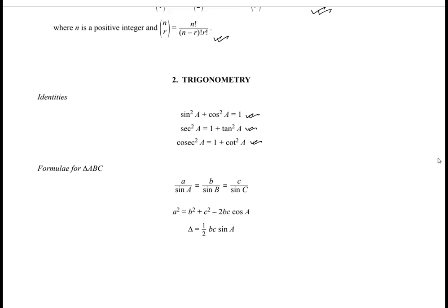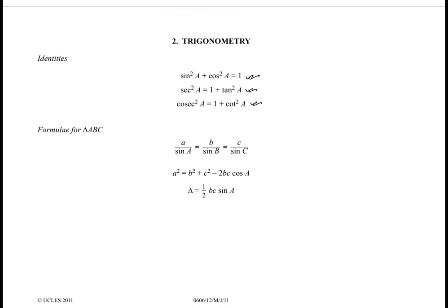The last part of the formula page contains formulas from triangle ABC. The first is the sine rule, the second is the cosine rule, and the last one is the formula for finding the area of a triangle using angle and sine. Now we can go to the first page to start solving the paper.